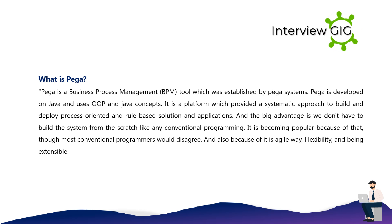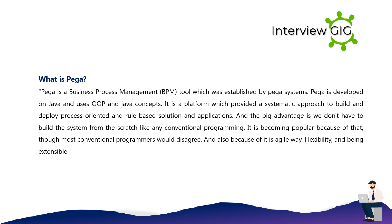What is Pega? Pega is a business process management (BPM) tool established by Pega Systems. Pega is developed on Java and uses open Java concepts. It is a platform that provides a systematic approach to build and deploy process-oriented and rule-based solutions and applications. The big advantage is you don't have to build the system from scratch like conventional programming. It is becoming popular because of its agile way, flexibility, and extensibility.